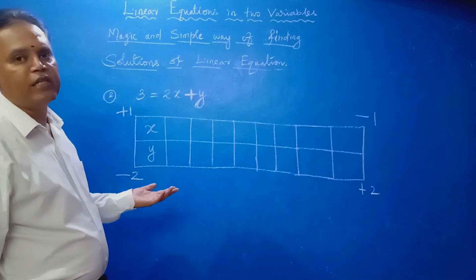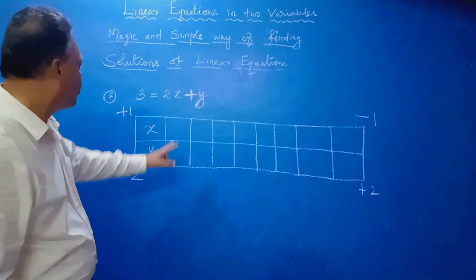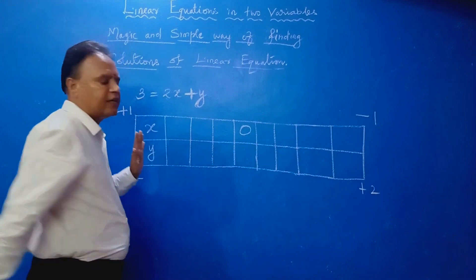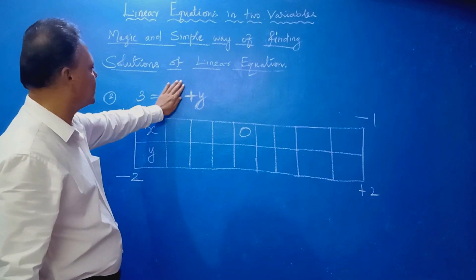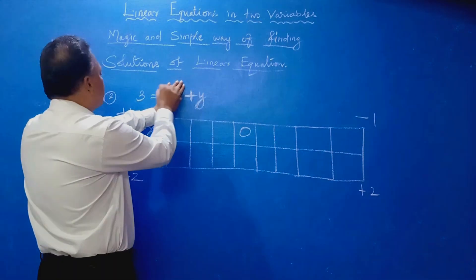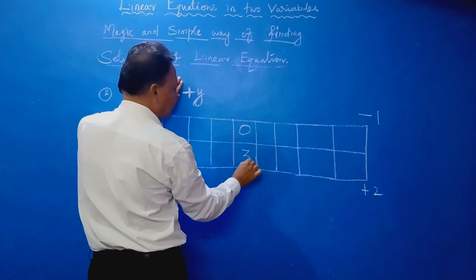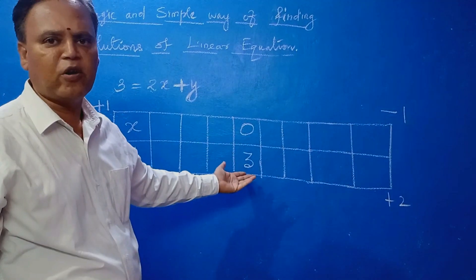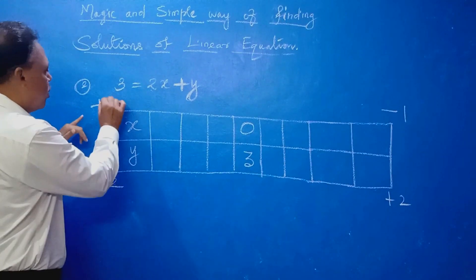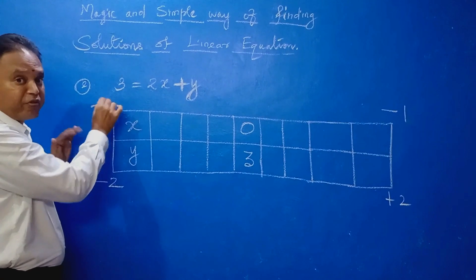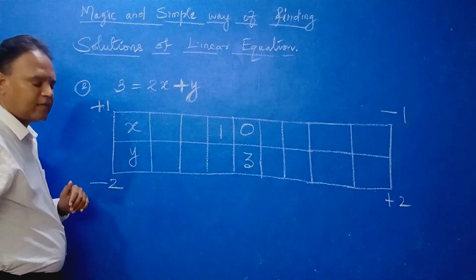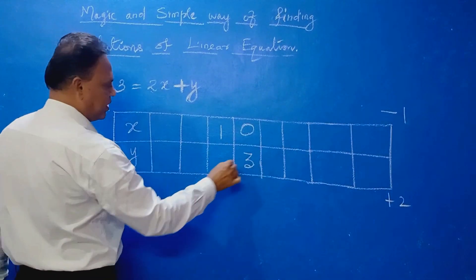Now I am going to find out one solution easily. Put x equal to 0 — this term will be zero, so you will automatically get y equal to 3. So the whole solution x equals 0, y equals 3 is ready now. You can find out many solutions: 0 plus 1 is 1, minus 2 plus 3 is 1.